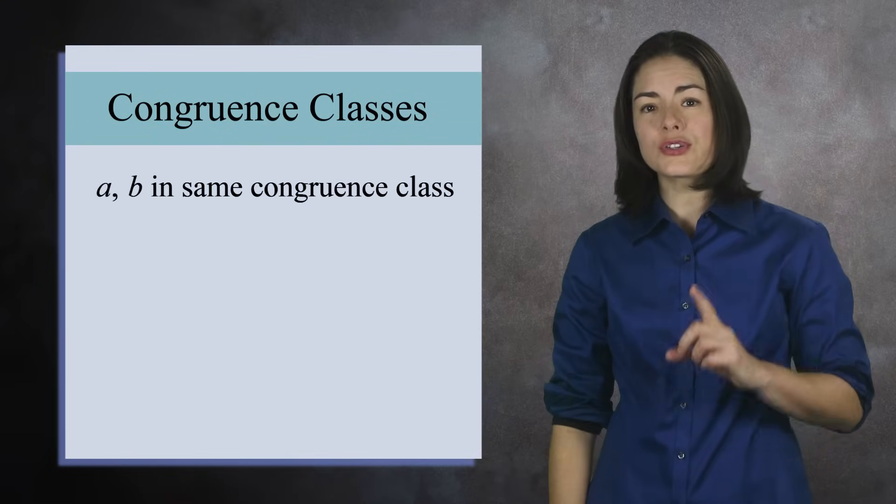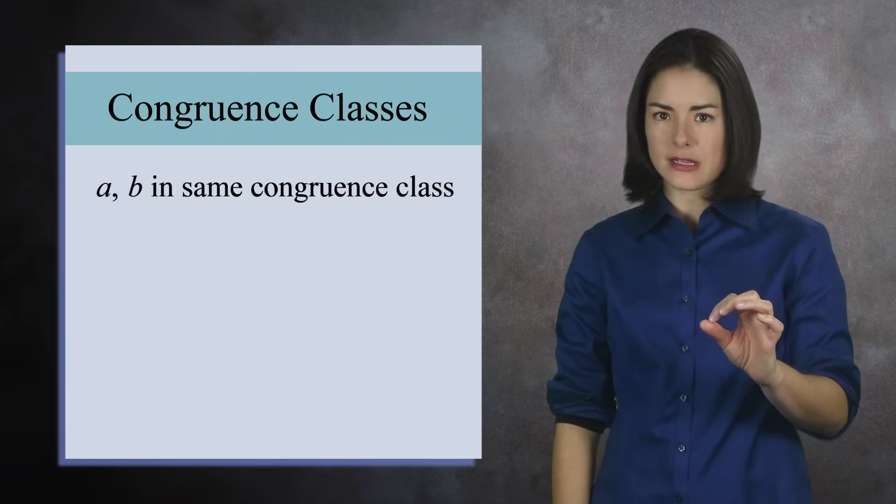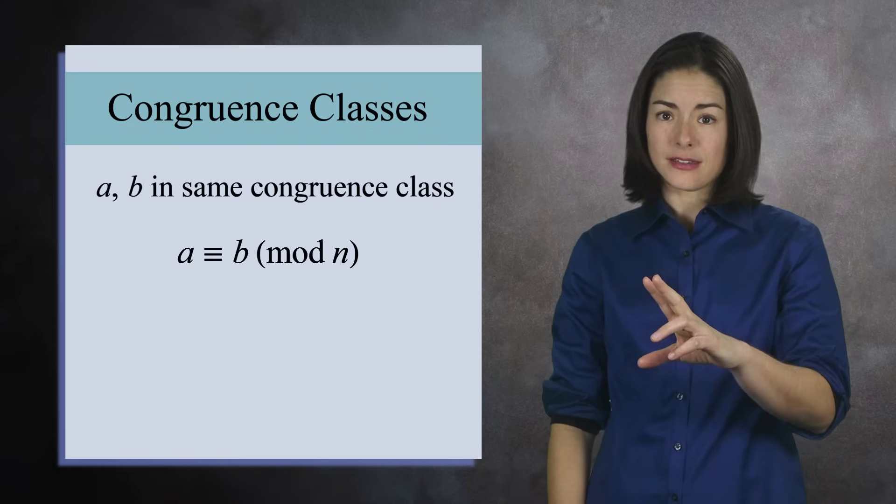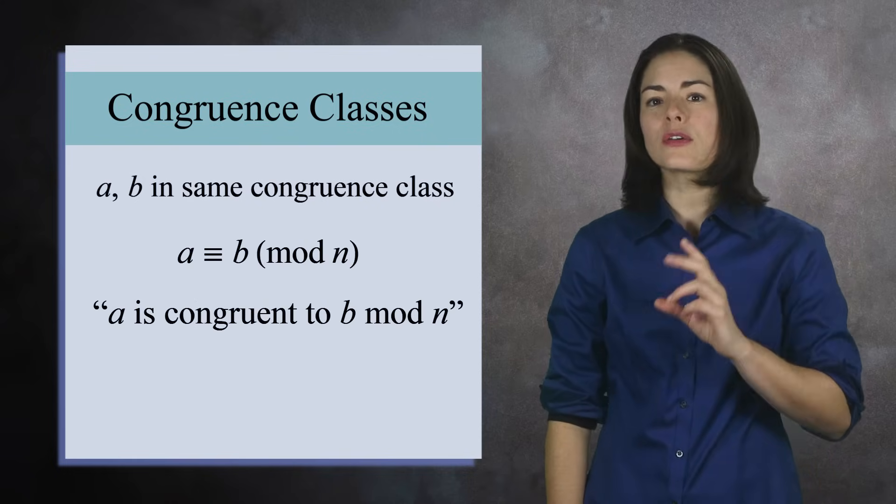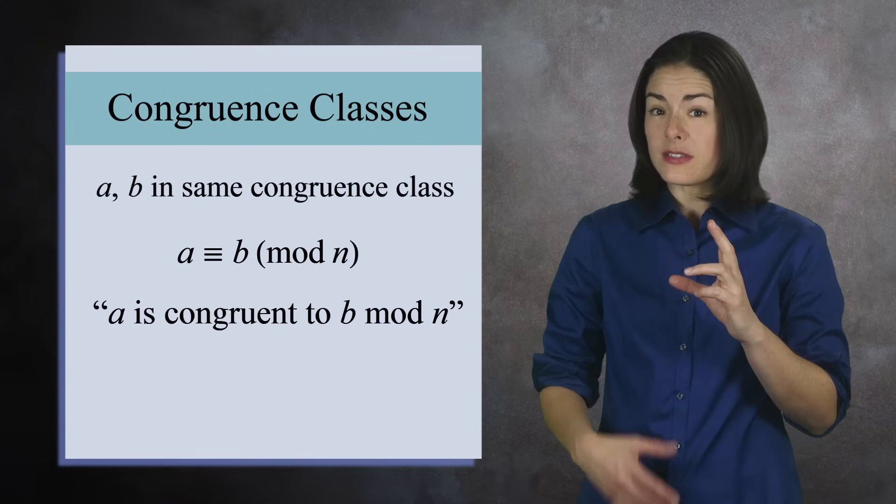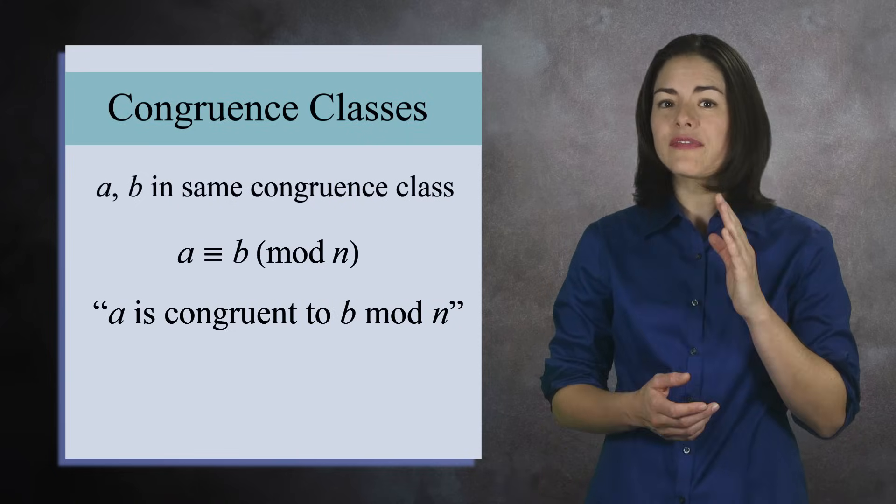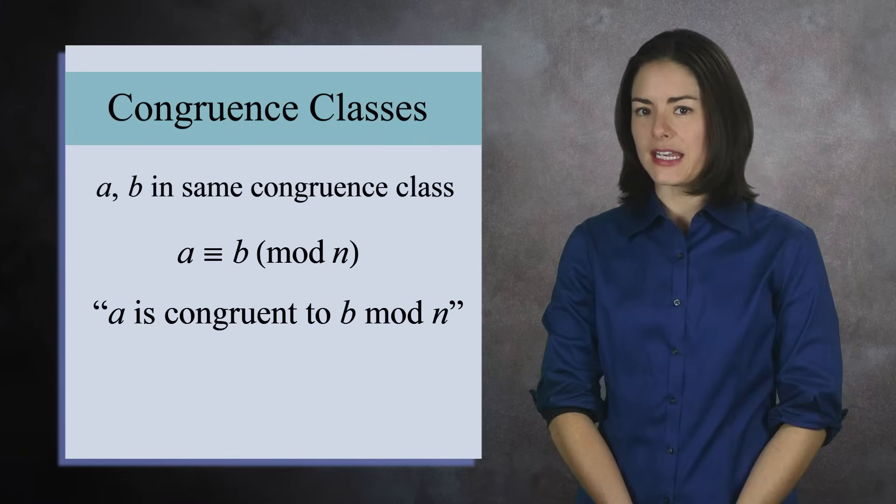By the way, whenever two integers a and b are in the same congruence class, we write it like this. We say this aloud as a is congruent to b mod n, and all this means is that a and b have the same remainder when you divide by n.